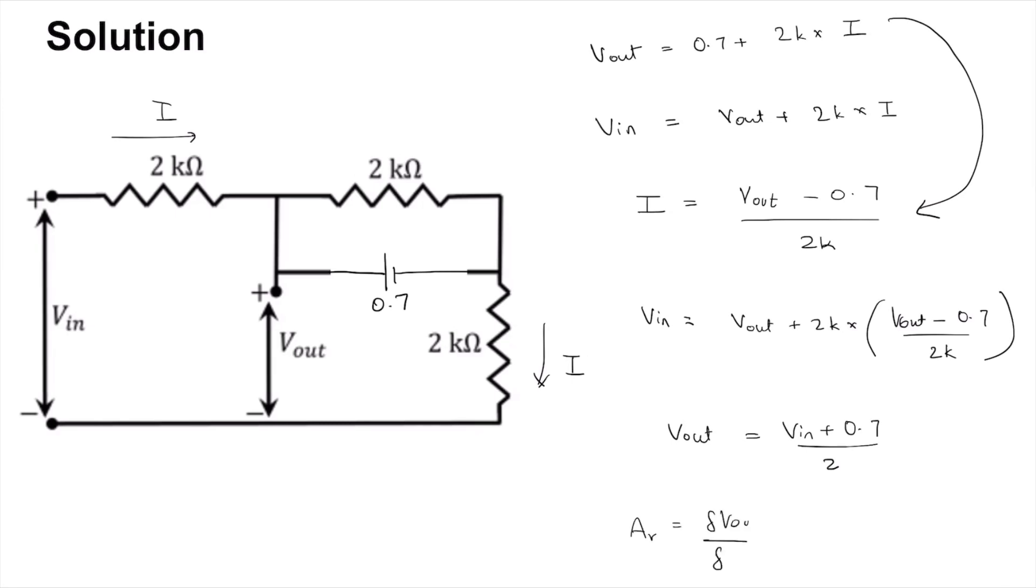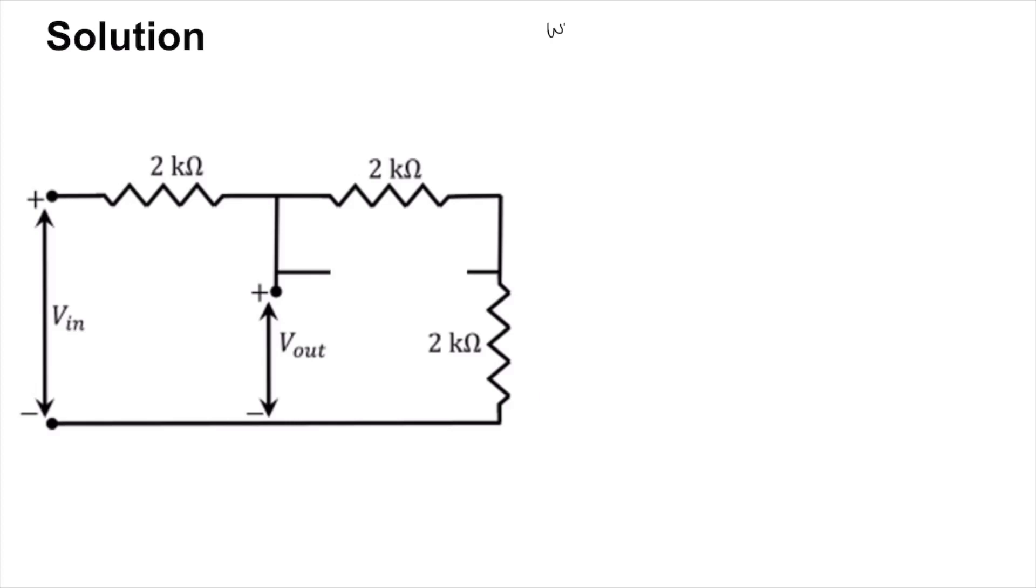It is dVout by dVin which is simply 1 over 2 when diode is on. You get Av is 1 by 2.